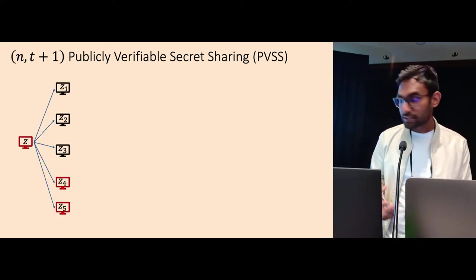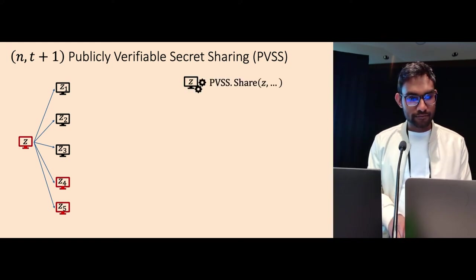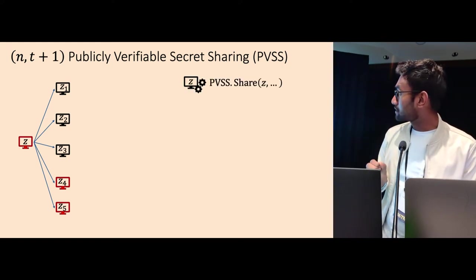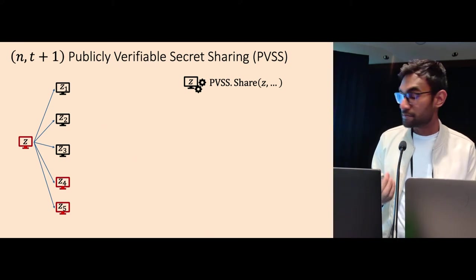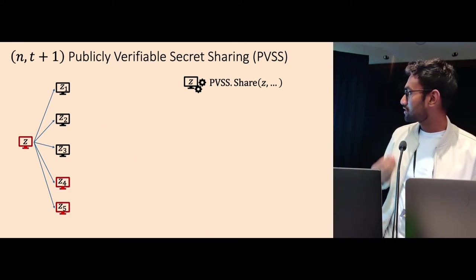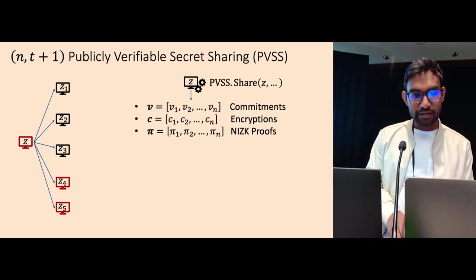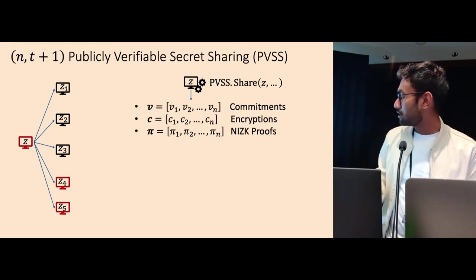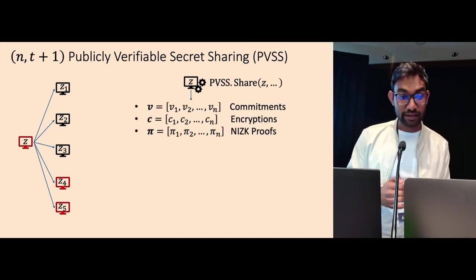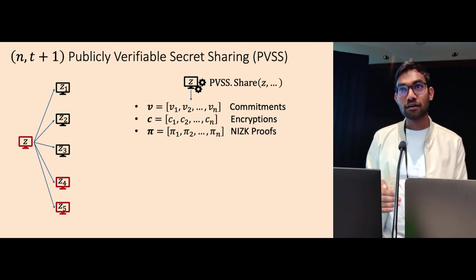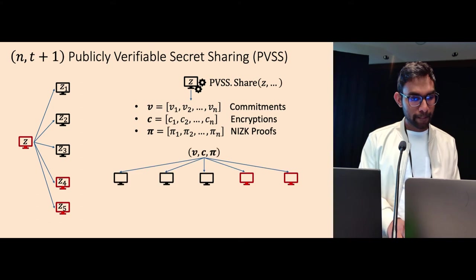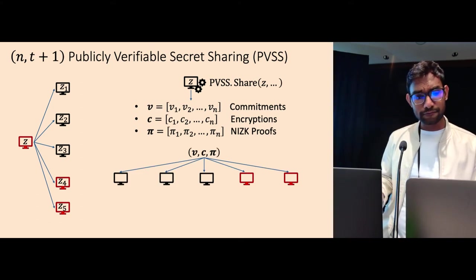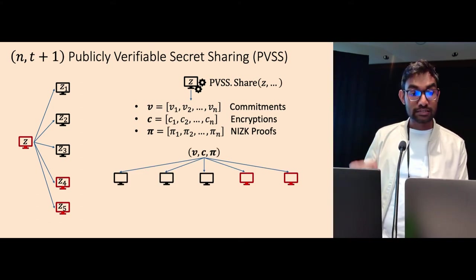So this is what it looks like. This is what we want. PVSS has this function, locally computable function, which is PVSS.share, which takes in a random secret, and it outputs three things, three vectors. The first vector is a commitment vector, second is encryption vector, and the third is proof vector, which are non-interactive zero-knowledge proofs.